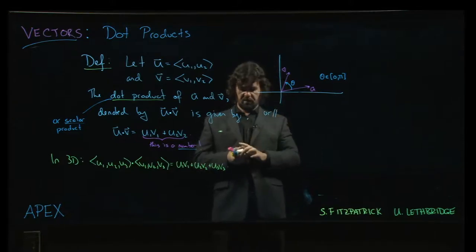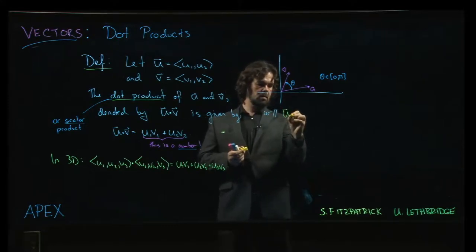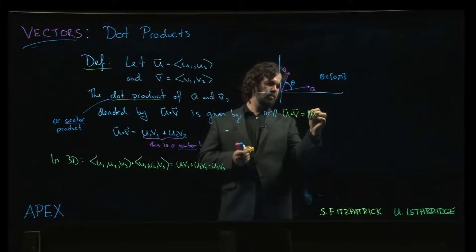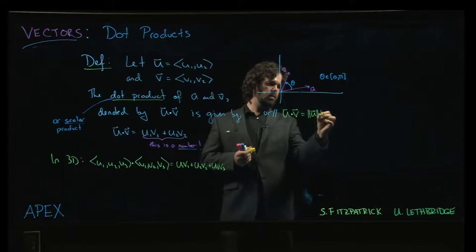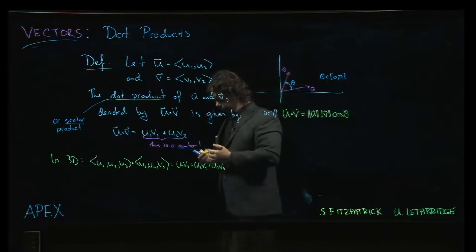And so the other definition that you will see is the following one. Now you will see the definition of the dot product given as u dot v is the magnitude of u times the magnitude of v times cosine theta. This is also a result that you will see.